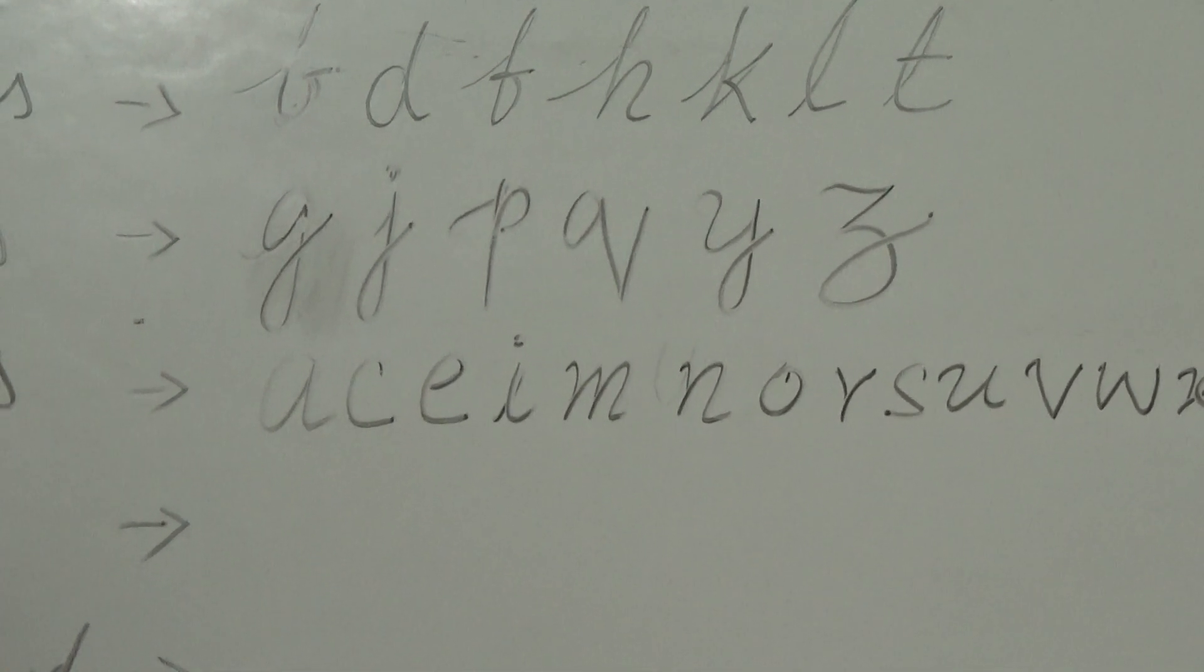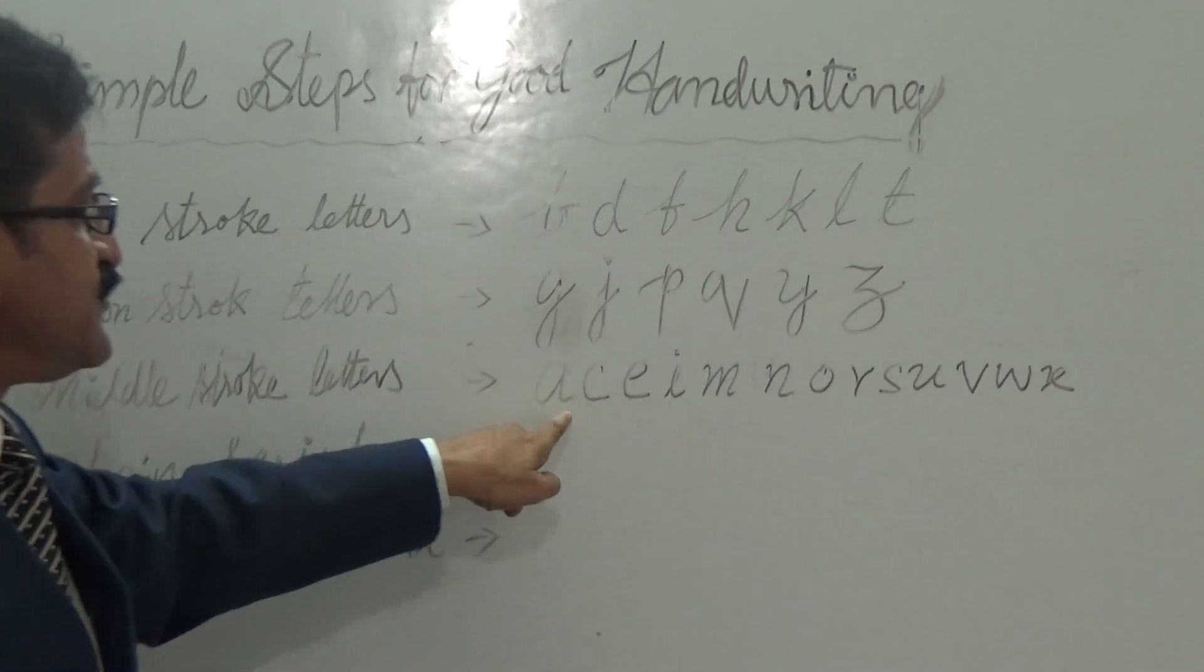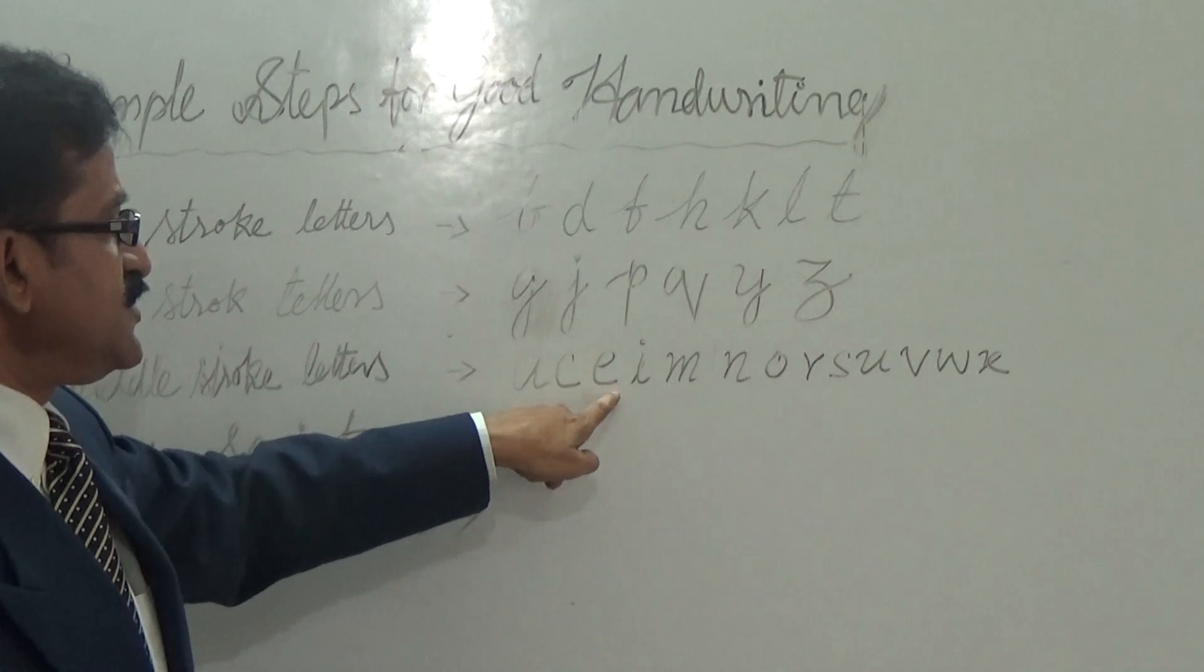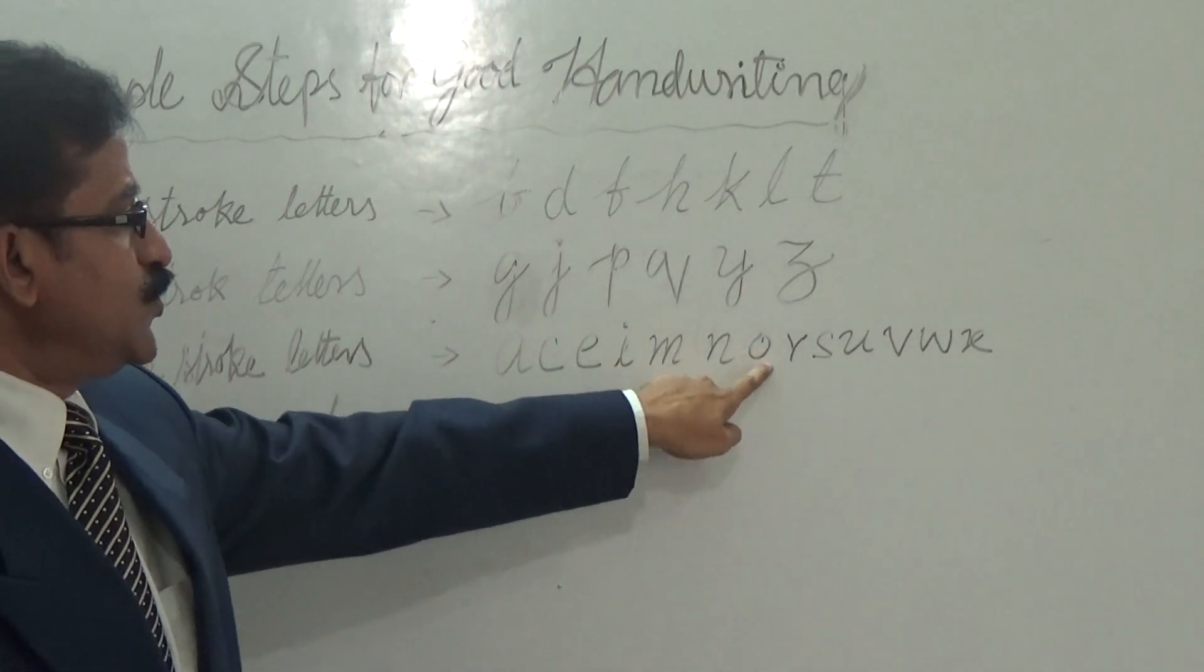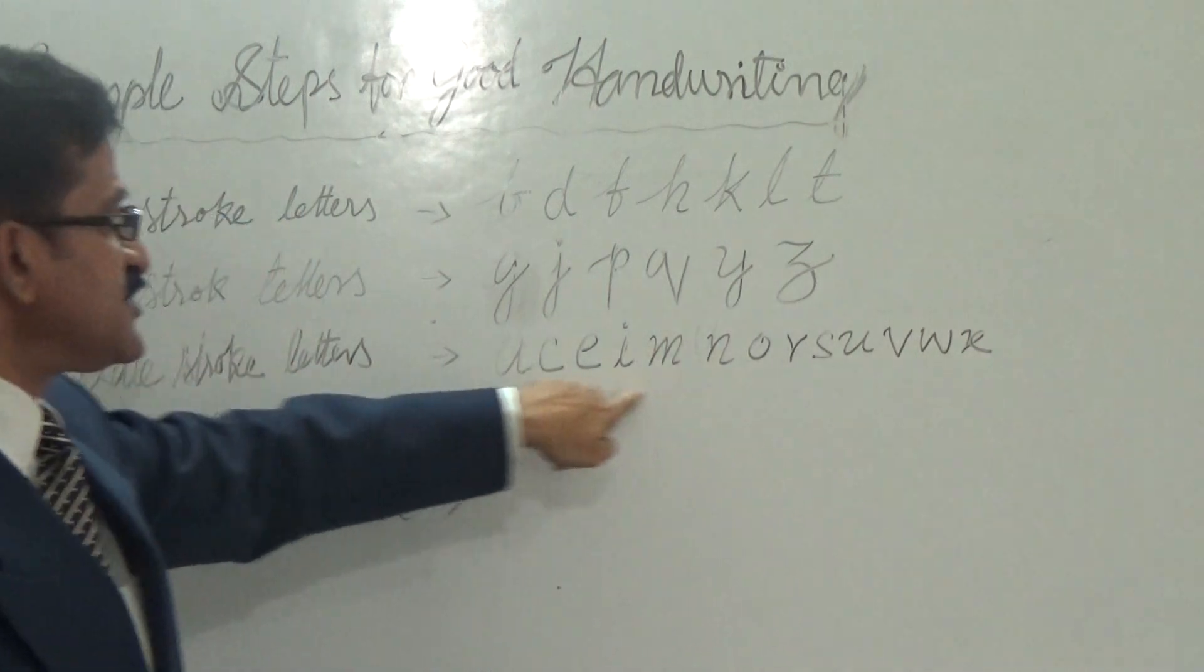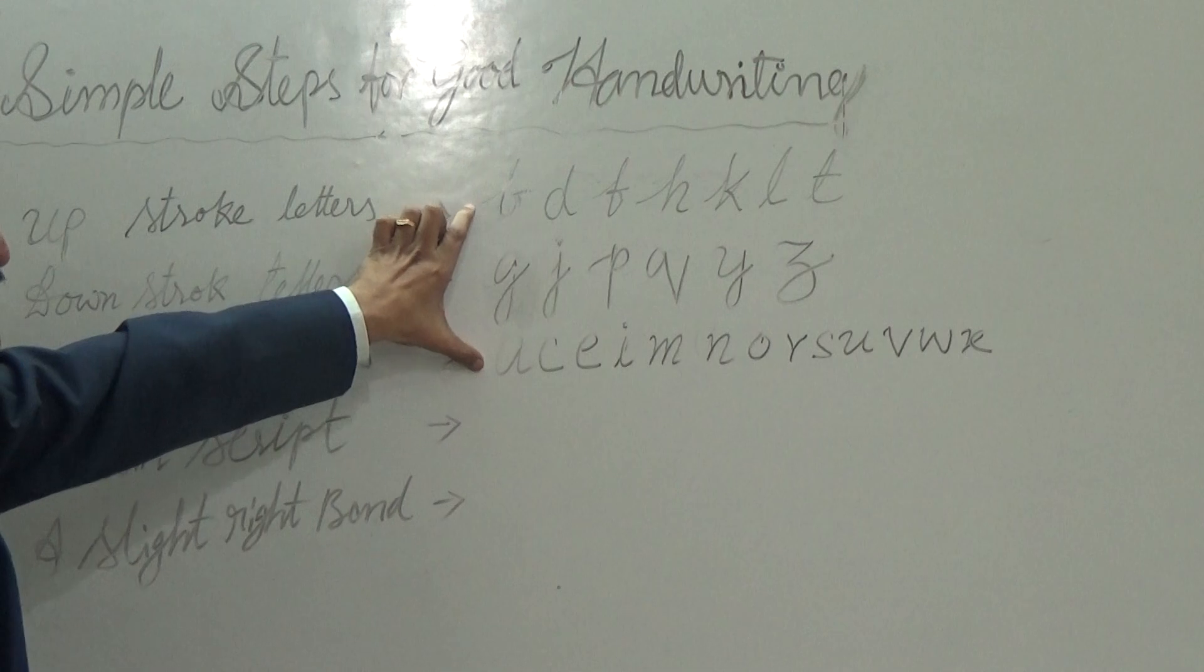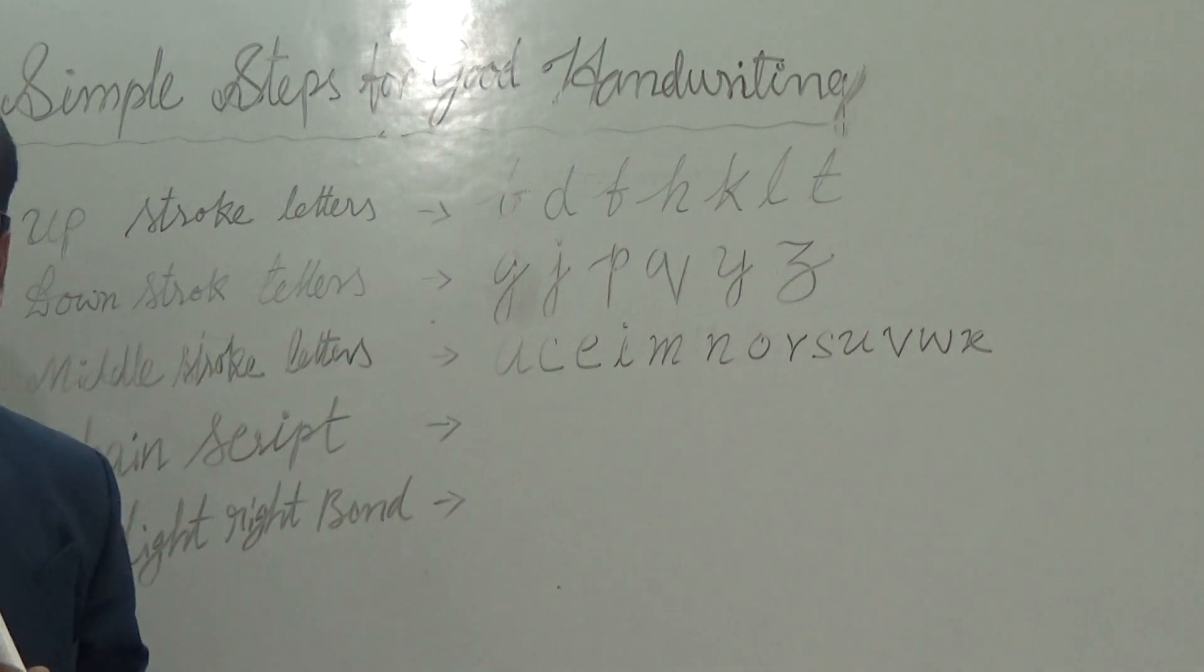And the third, middle stroke letters. In the middle stroke letters we have these: A, C, E, I, M, N, O, R, S, U, V, W, X. All these letters may remain in the middle. We have these three types of letters while we write English. This first thing we have to remember, three points.